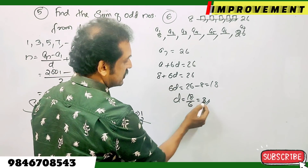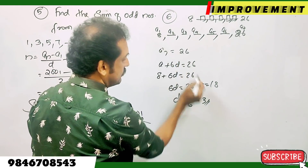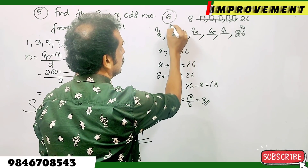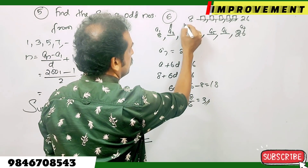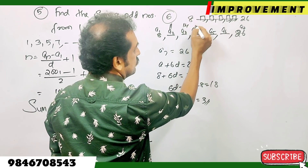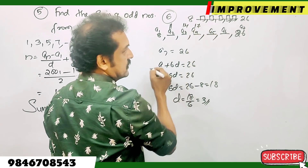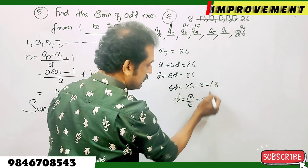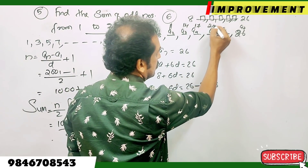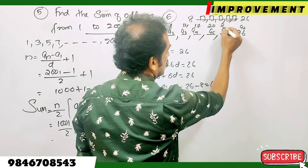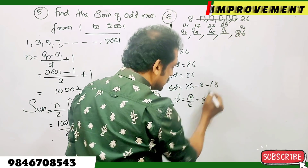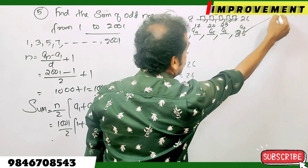With D equal to 3: 8 plus 3 is 11, 11 plus 3 is 14, 14 plus 3 is 17, 17 plus 3 is 20, 20 plus 3 is 23, and 23 plus 3 is 26. So the five inserted numbers are 11, 14, 17, 20, 23.